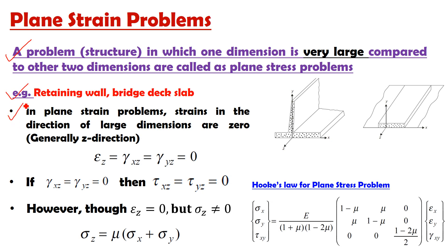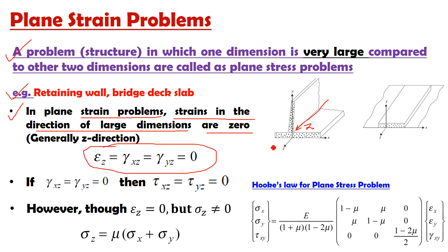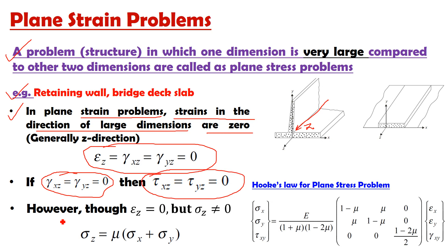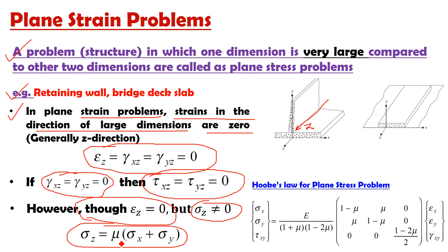In plane strain problems, strains in the direction of the large dimension are zero. If the long dimension is represented as z, then strains in z are equal to zero: εz = γxz = γyz = 0. If γxz and γyz are zero, then τxz and τyz are also equal to zero — similar to plane stress. But in plane strain, though εz = 0, σz is not equal to zero; σz = μ·(σx + σy).